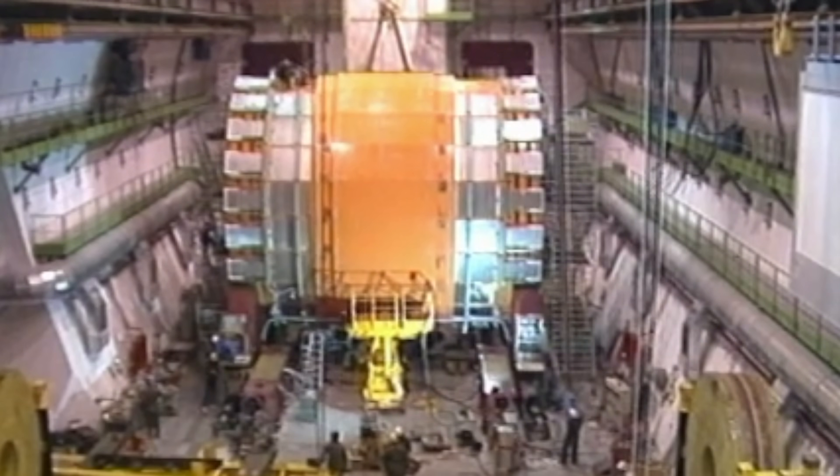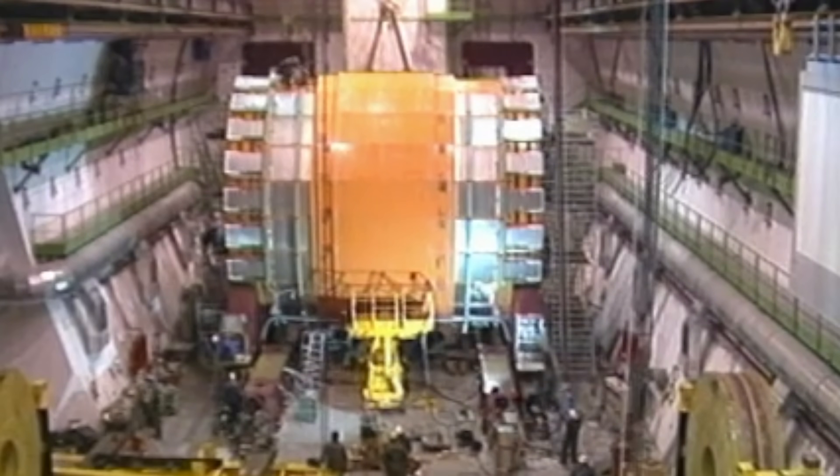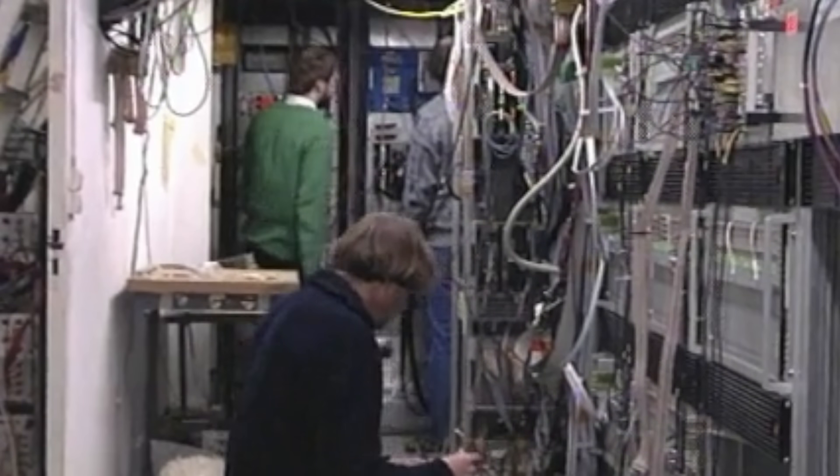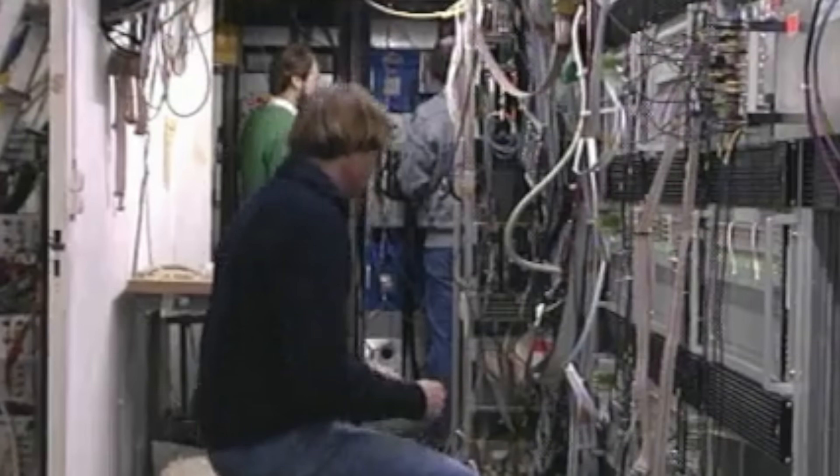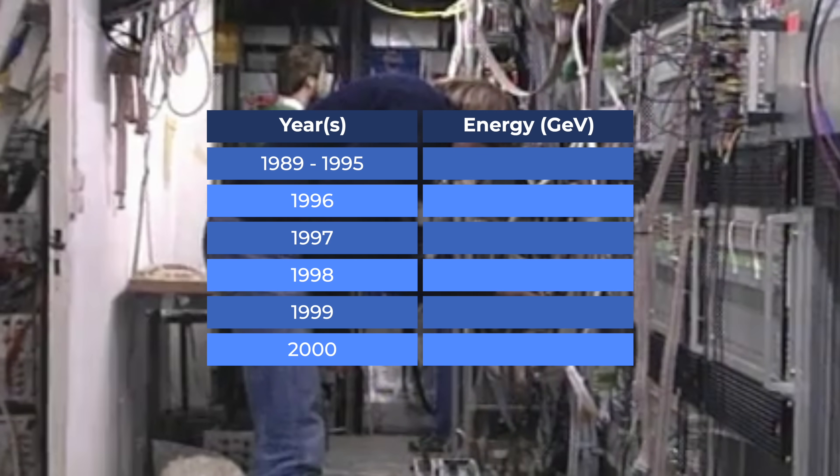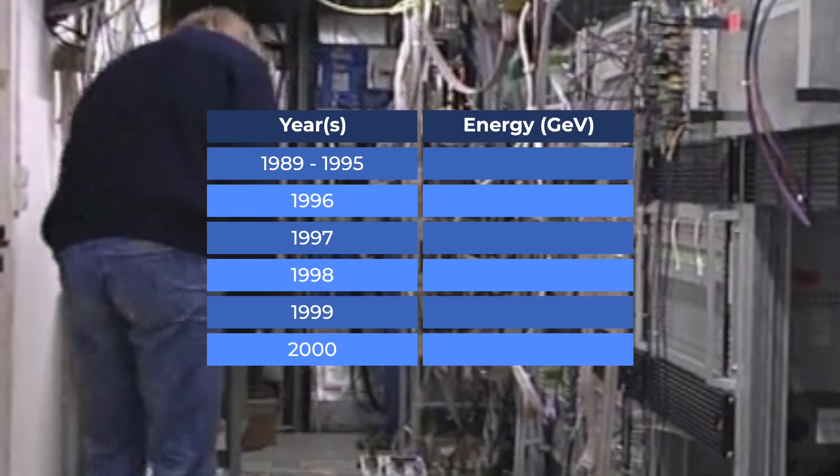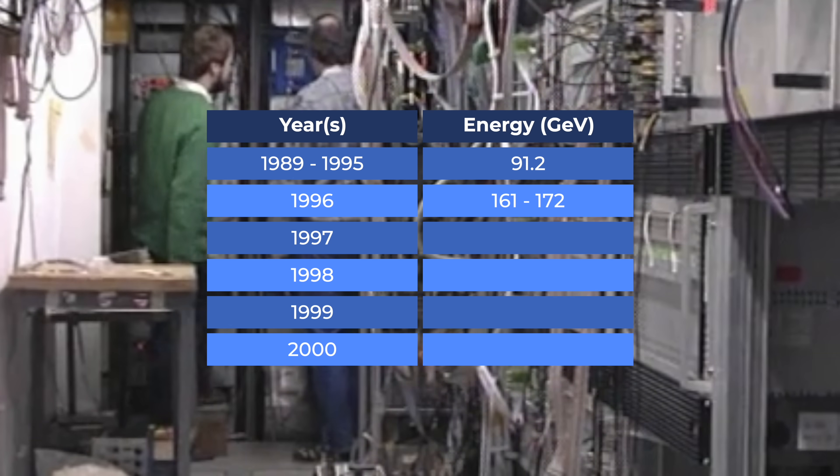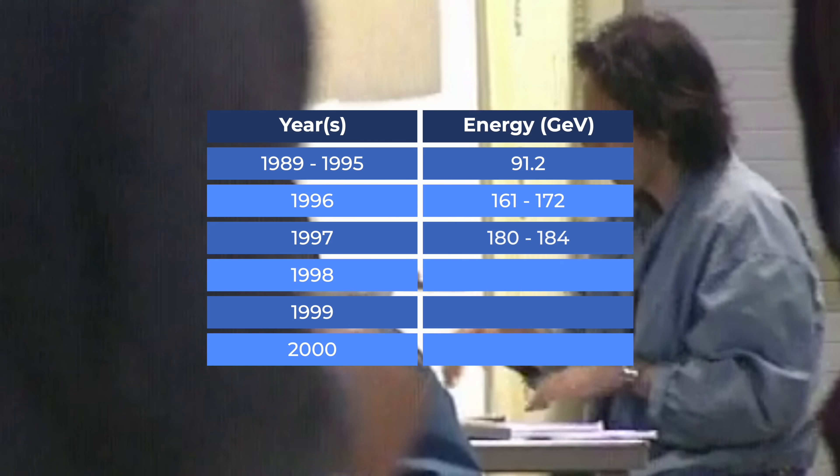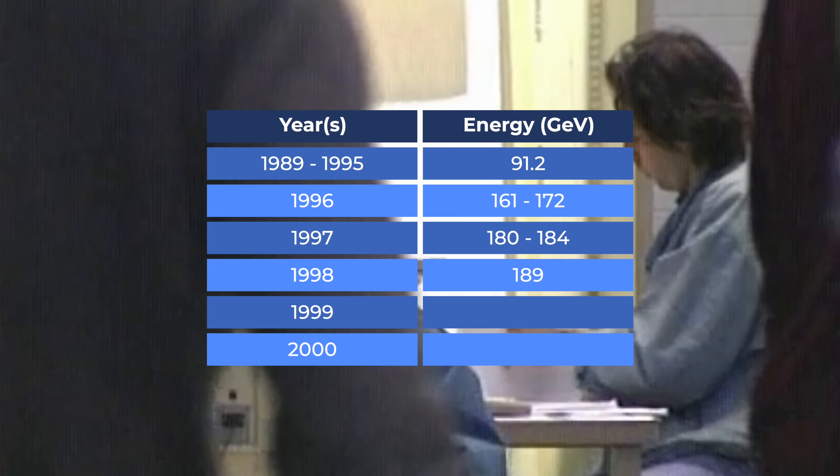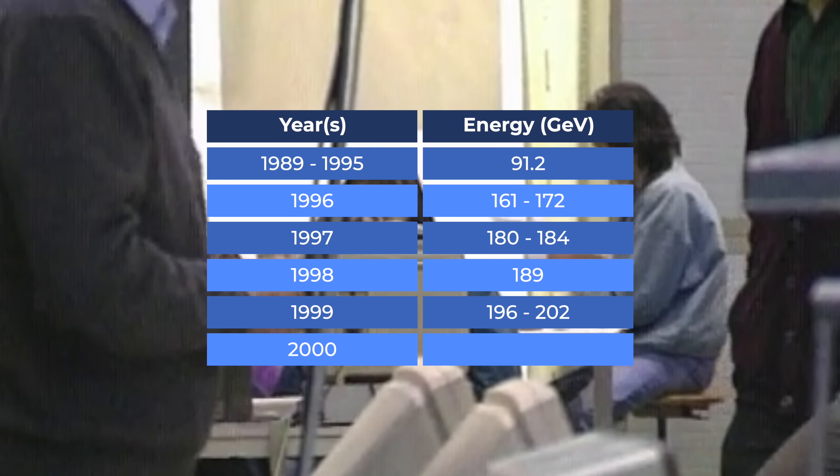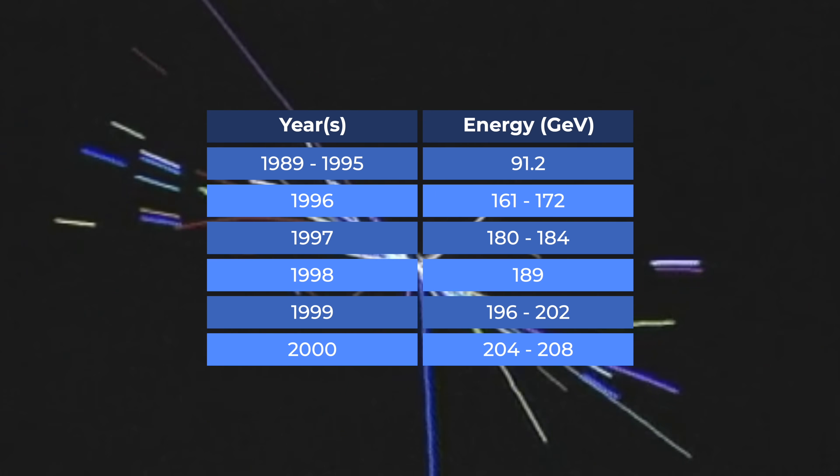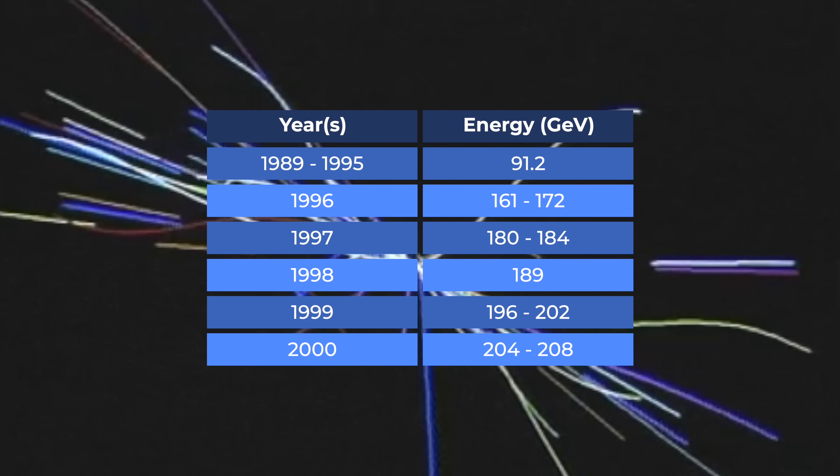The LEP accelerator was located at CERN in Europe. It operated from 1989 to late 2000, and it collided electrons and antimatter electrons. The beam energy was increased over the years. From 1989 to 1995, the collision energy was 91.2 GeV. Then, each subsequent year, the collision energy was raised. In 2000, the year the accelerator stopped operating, the maximum collision energy was 208 GeV. By the way, to give a sense of scale, the mass of the proton is about 1 GeV.